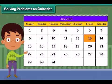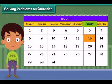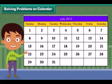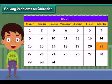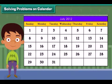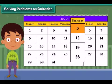What day is it on the 13th of July? It is Friday. What is the date on the second Saturday? It is the 14th of July. Is the 21st a Sunday? No, it is not a Sunday — it is a Saturday.